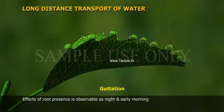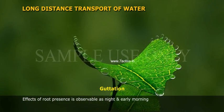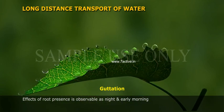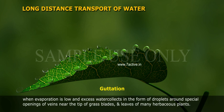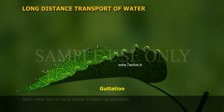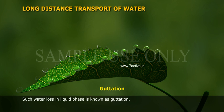The effect of root pressure is observable at night and early morning when evaporation is low and excess water collects in the form of droplets around special openings of veins near the tip of grass blades and leaves of many herbaceous plants. Such water loss in liquid phase is known as guttation.